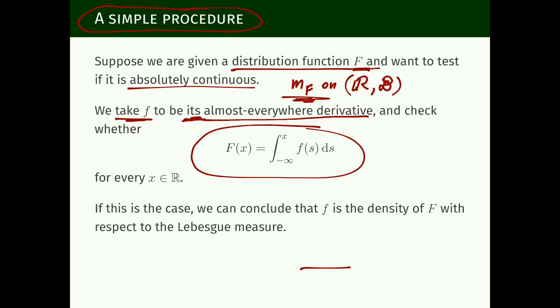If our function is like this — a step function, for example — when we compute the derivative we get a function which is zero almost everywhere, except at the jump points where it is undefined. So you can see that we can lose something: when we integrate the derivative, we do not necessarily get the original function back. And even by making the function continuous, we can make it continuous in such a bad way that this still does not work.